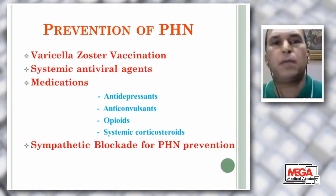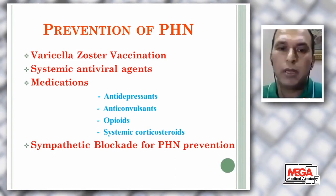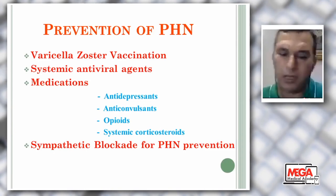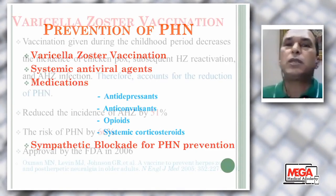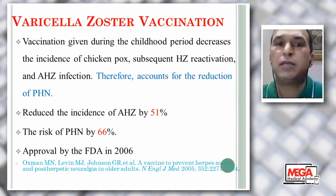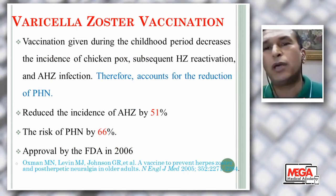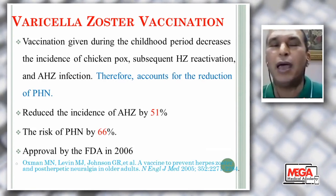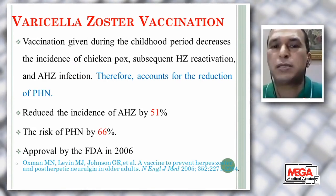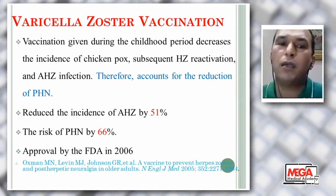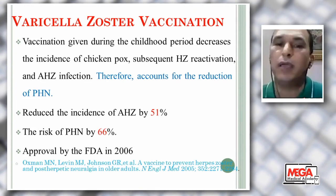What is our strategy for prevention of post-herpetic neuralgia? Based on evidence-based medicine, we can use varicella zoster vaccine, systemic antiviral therapy, medications like antidepressants, anticonvulsants, opioids, and systemic corticosteroids, and sympathetic blockade for prevention of post-herpetic neuralgia. The varicella zoster vaccine, given during childhood in developed countries, decreases the incidence of chickenpox with subsequent reduction in acute herpes zoster and its reactivation, reducing the incidence of post-herpetic neuralgia by 66%. It was approved by the FDA in 2006.